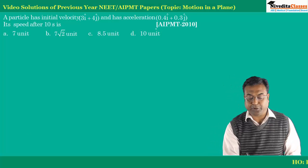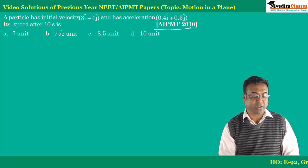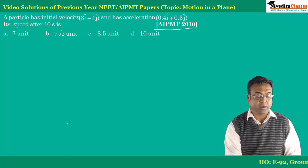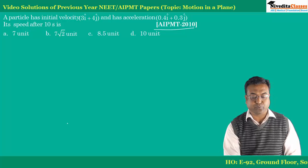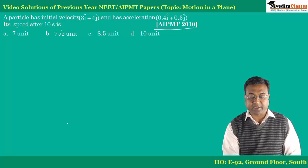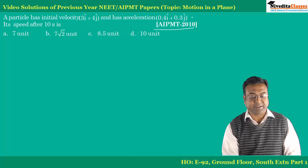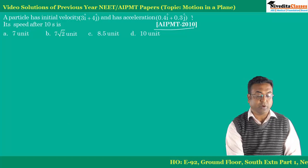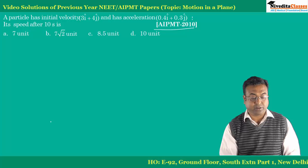This question was asked in 2010. A particle has initial velocity of 3i plus 4j and an acceleration of 0.4i plus 0.3j. We have to find its speed after 10 seconds.